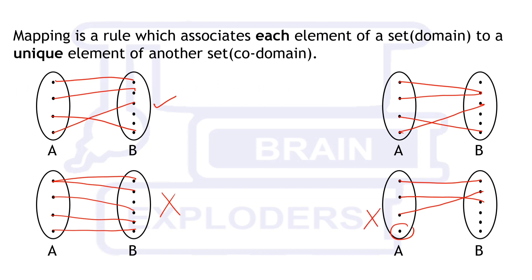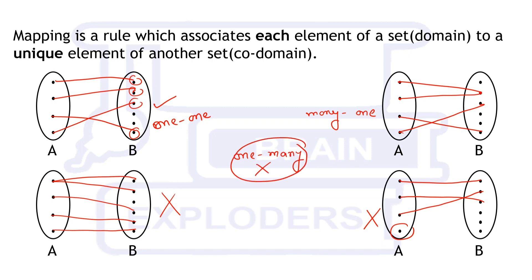If for different inputs there are different outputs — meaning for four inputs we get four different outputs — then the mapping is called a one-to-one mapping. If for at least two different inputs there is the same output, the mapping is called a many-to-one mapping. There is no such thing as a one-to-many mapping, because if one input gives more than one output, it is not considered a mapping at all.